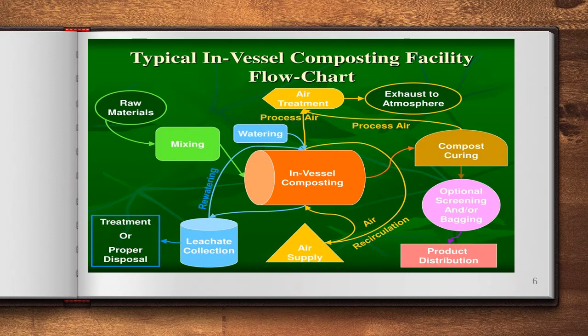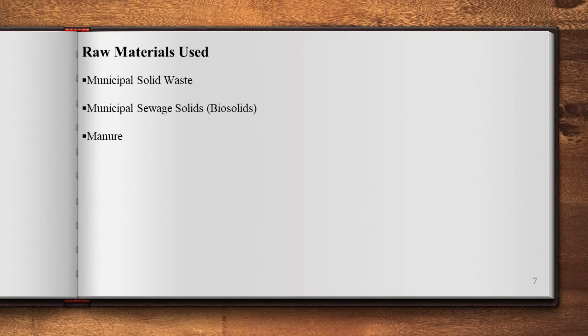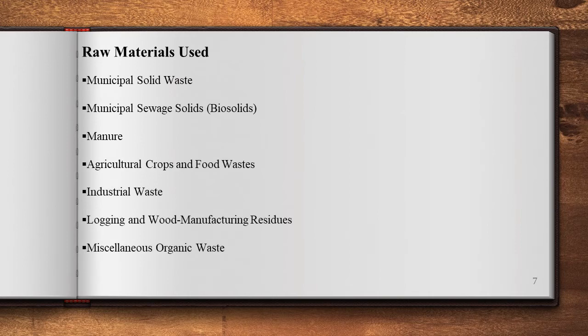Raw materials used in in-vessel composting include: municipal solid waste, manure, agricultural crops and food waste, industrial waste, logging and wood manufacturing residues, and miscellaneous organic waste.